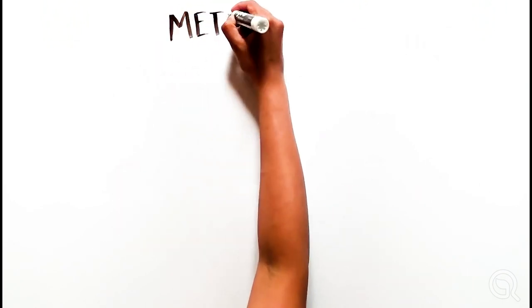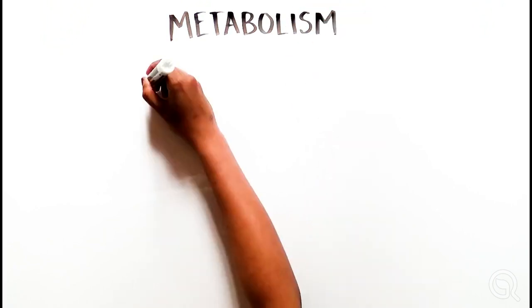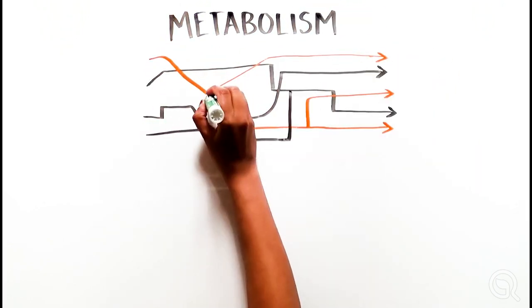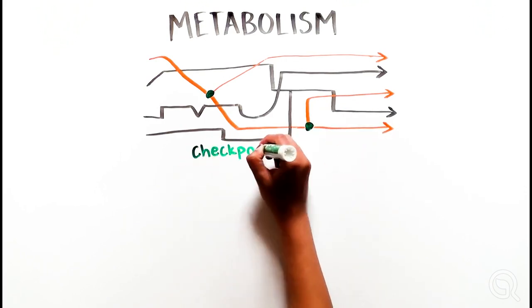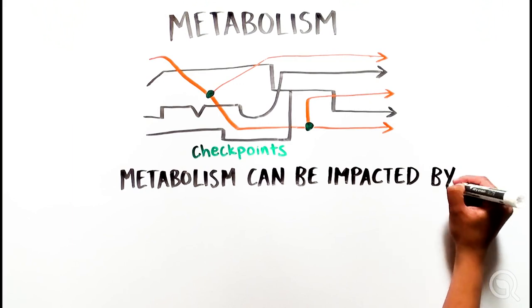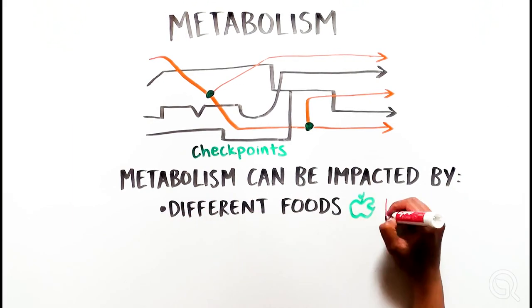Your metabolism involves multiple steps, many enzymes, and overlapping paths. There are also many checkpoints that ensure everything is working properly. Metabolism can be impacted in many ways, for example, eating different foods, exercising, or disease.